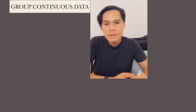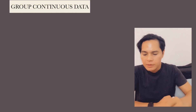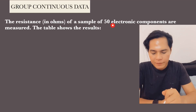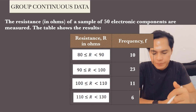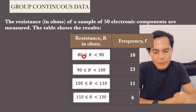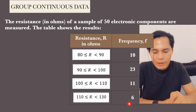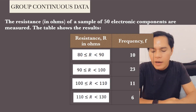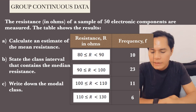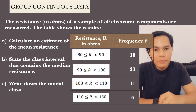Now here is our next example — grouped continuous data. The resistance in ohms of a sample of 50 electronic components are measured, and the table shows the results. The class intervals show resistance ranges with their frequencies; for example, there are 10 components with resistance greater than or equal to 80 but less than 90. The questions are: (A) calculate an estimate of the mean resistance, (B) state the class interval that contains the median resistance, and (C) write down the modal class.